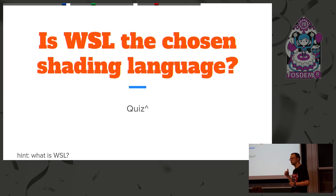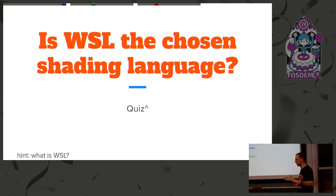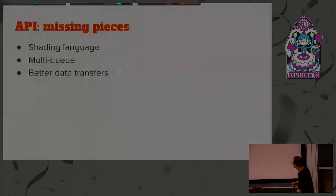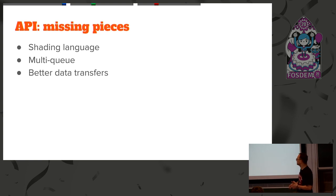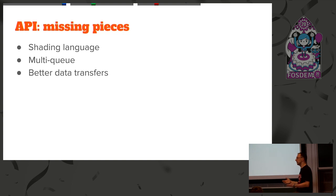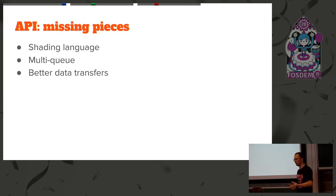WSL — is that our shading language? I mentioned we haven't figured that out yet. No, it's not — it's just a proposal from Apple. We don't have a shading language finalized yet. We also don't support multiple queues yet, which would be important for async compute. And our data transfers between CPU and GPU are not optimal — it's hard to figure those out in terms of security, not allowing CPU and GPU to race and change data, because racing introduces non-portable and potentially insecure behavior.